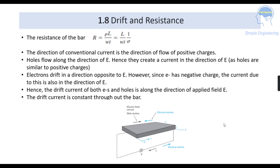Drift and Resistance. The resistance of the bar — in the figure you can see that a semiconductor bar is shown — where the resistance of the bar is given as R = rho * L / (W * T). And that you can write in terms of 1 by sigma, so the equation will get changed to L / (W * T) * (1 / sigma).